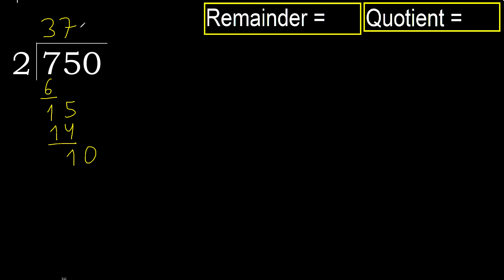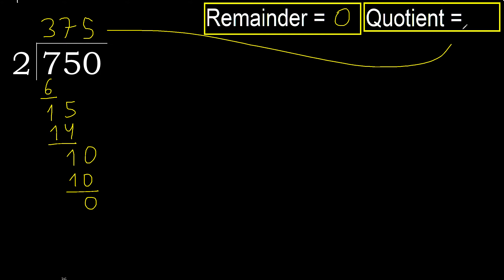Next: 10. 2 multiplied by 5 is 10 — not greater. Subtract 0. Next: that is not a number, therefore finish it. 750 divided by 2 is 375.